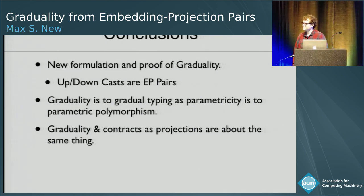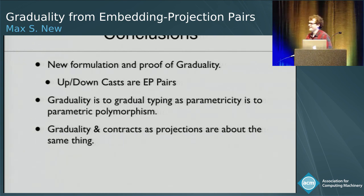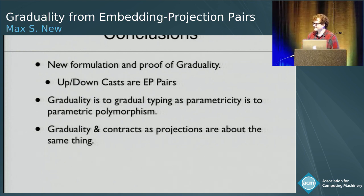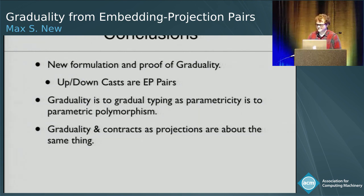Q: Is there non-anecdotal evidence to support the view that writing programs is quicker in untyped languages, which appears to be the motivation of gradual typing? A: I don't know — but there's plenty of empirical evidence that people do write giant programs in dynamically typed languages, so I guess that counts. Q: Does your result help design gradual parametric languages? A: We'll see.